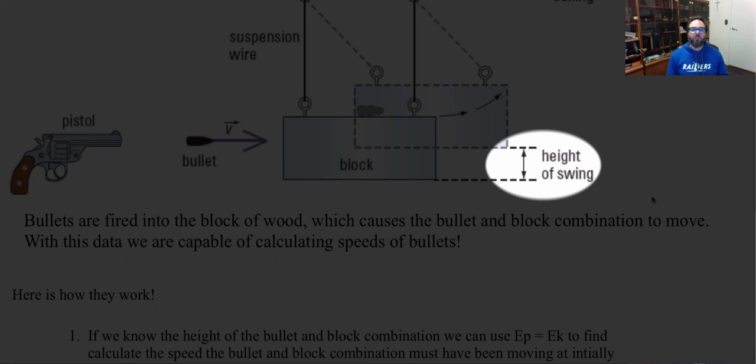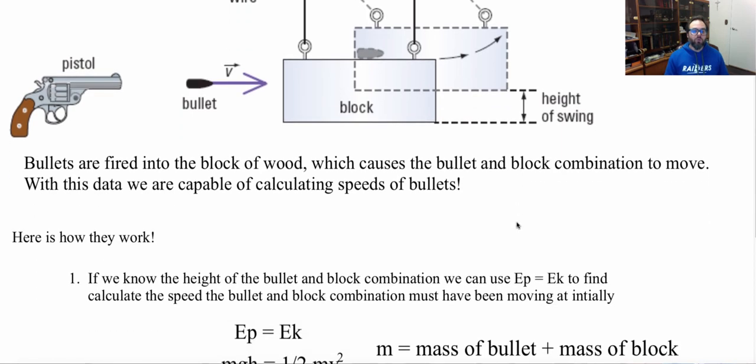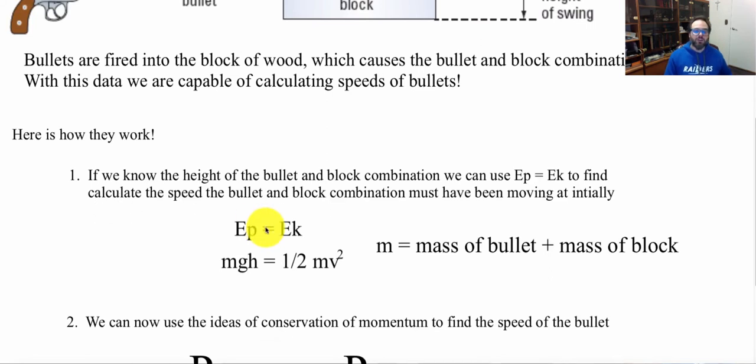So if we know the height of the bullet and the block combination, we could use our potential energy is equal to kinetic energy to find and calculate the speed of the bullet and the block combination must have to be moving initially. So generally, what we're saying is potential energy is equal to kinetic energy. So mgh, mass times gravity times height is equal to half of the mass times velocity squared, where the mass is the mass of the bullet and the mass of the block.